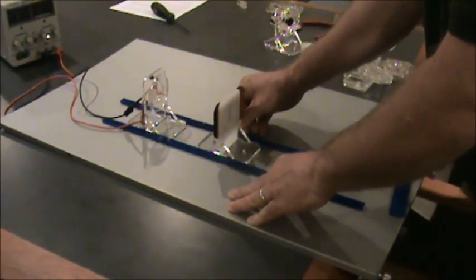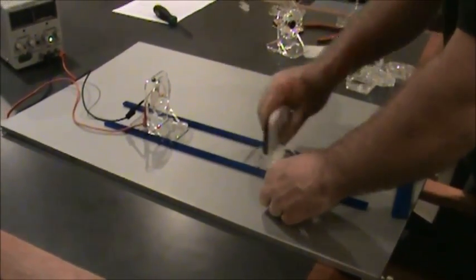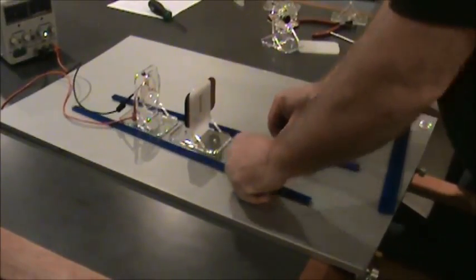The alignment rods are magnetic and allow any ferrous metal surface, such as a whiteboard or the side of a desktop computer, to act as a bench for the optical components.